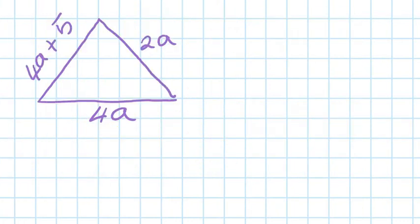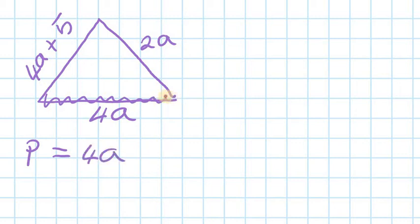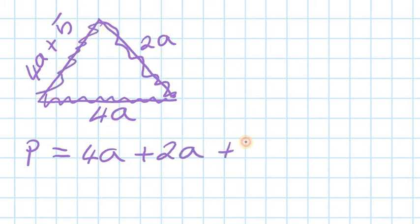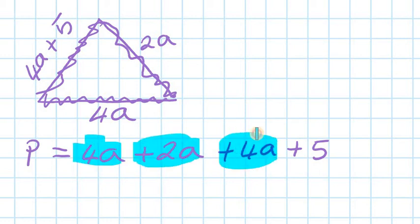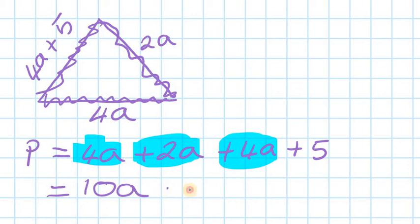So this is the diagram — it's a triangle. The question is: find the perimeter of this triangle. You know that perimeter is the length around the shape. So P equals — starting from here: this is 4A, then you add this length which is 2A, then you add this length which is 4A plus 5. The like terms are 4A plus 2A plus 4A. So 4 plus 2 is 6, 6 plus 4 is 10 — your answer is 10A. And then the 5 has no like term, so I just write plus 5.